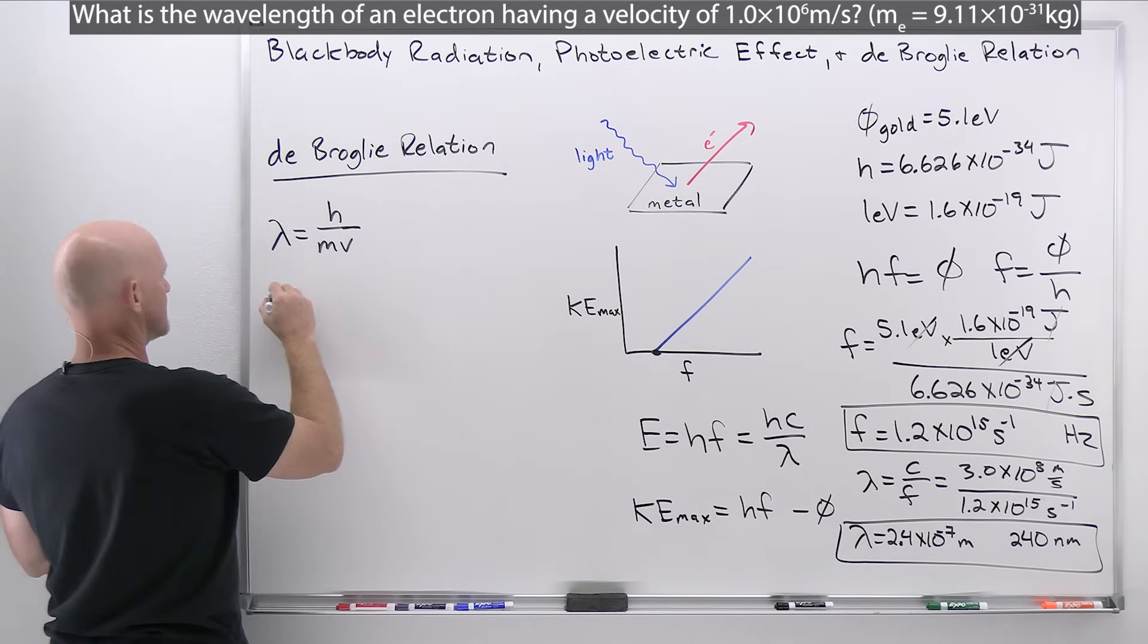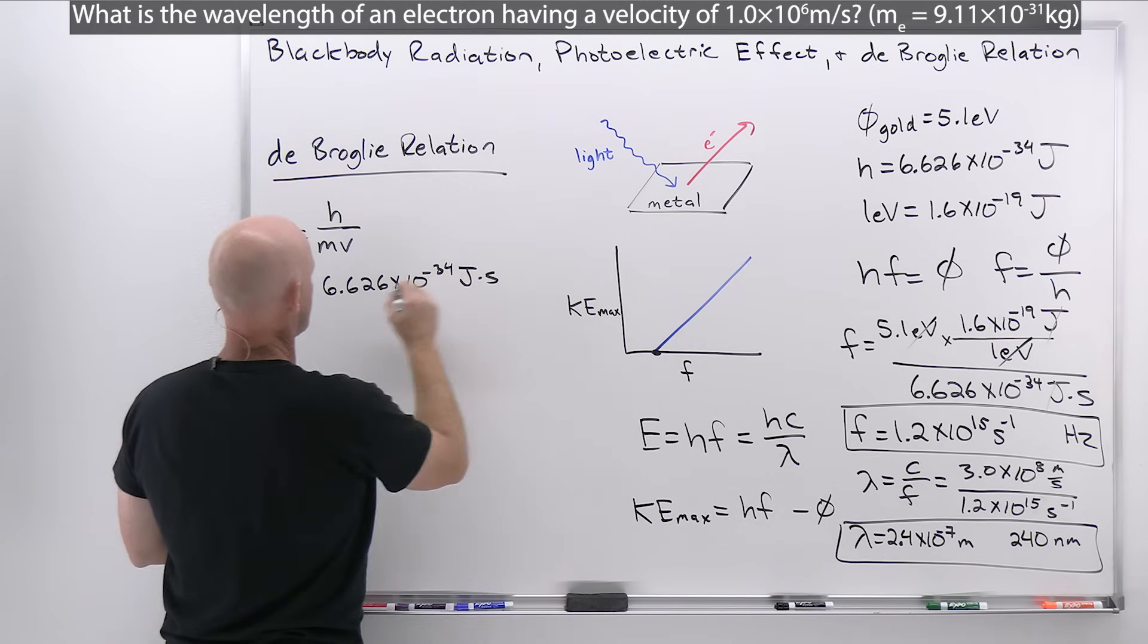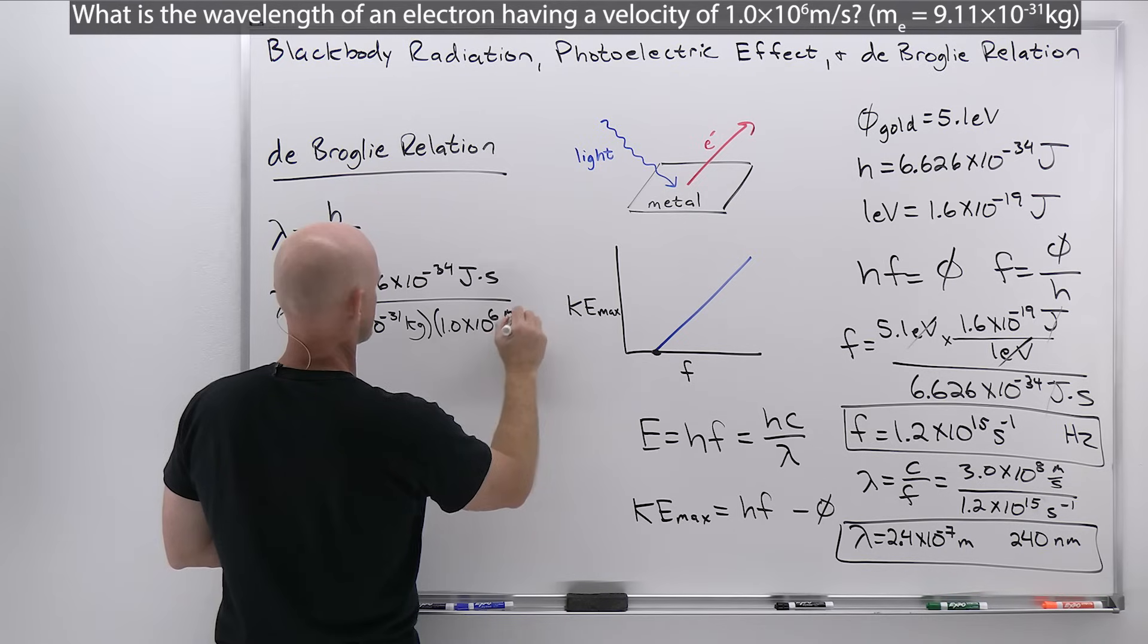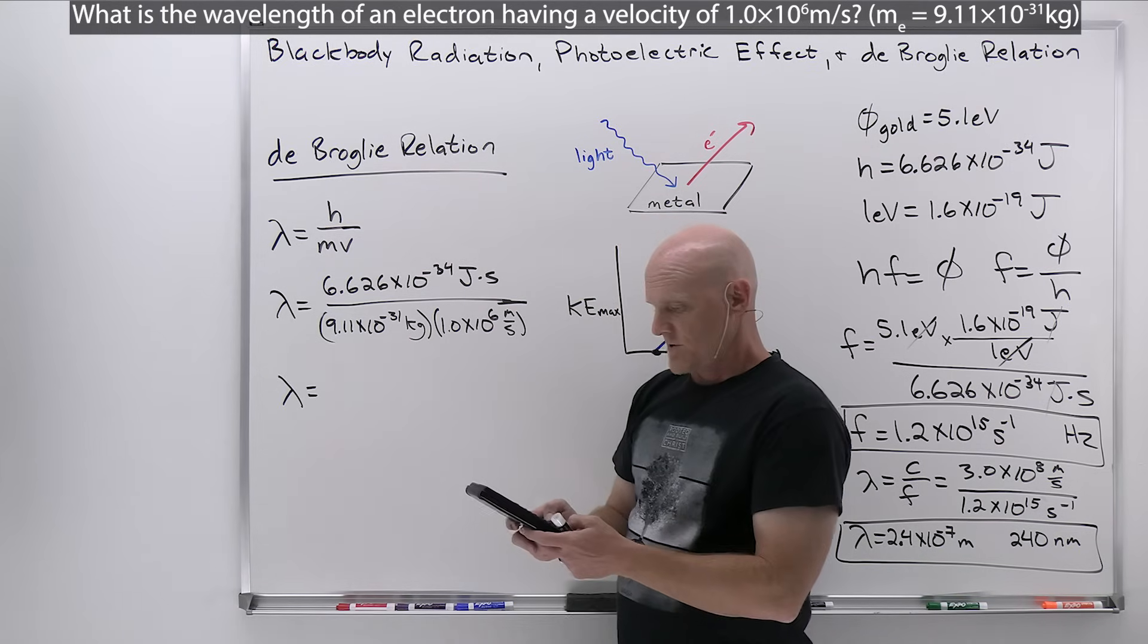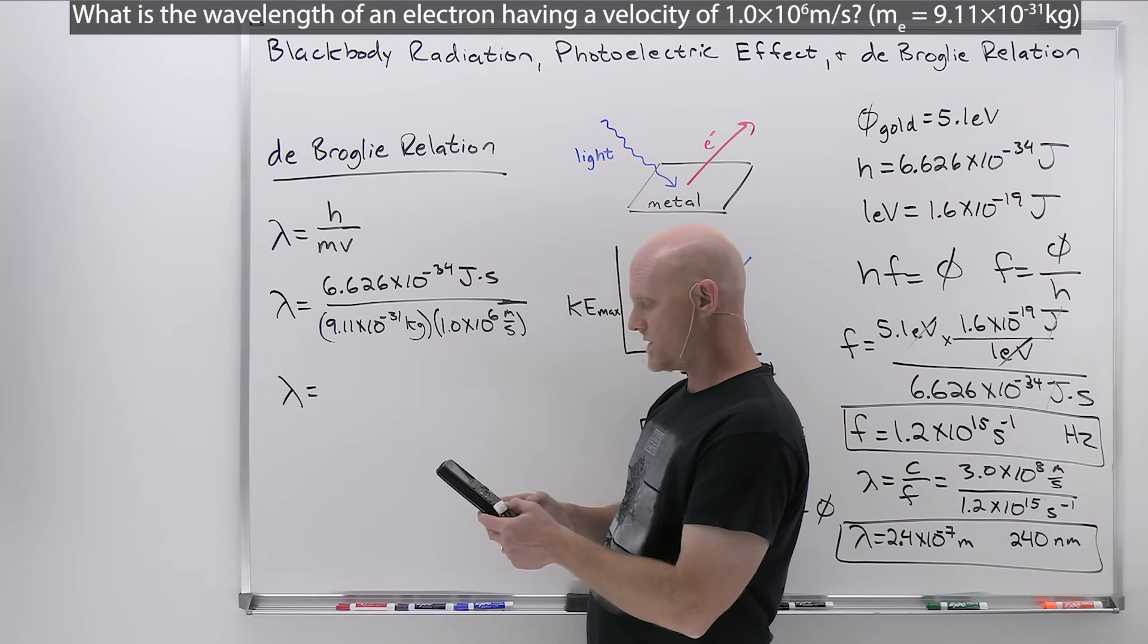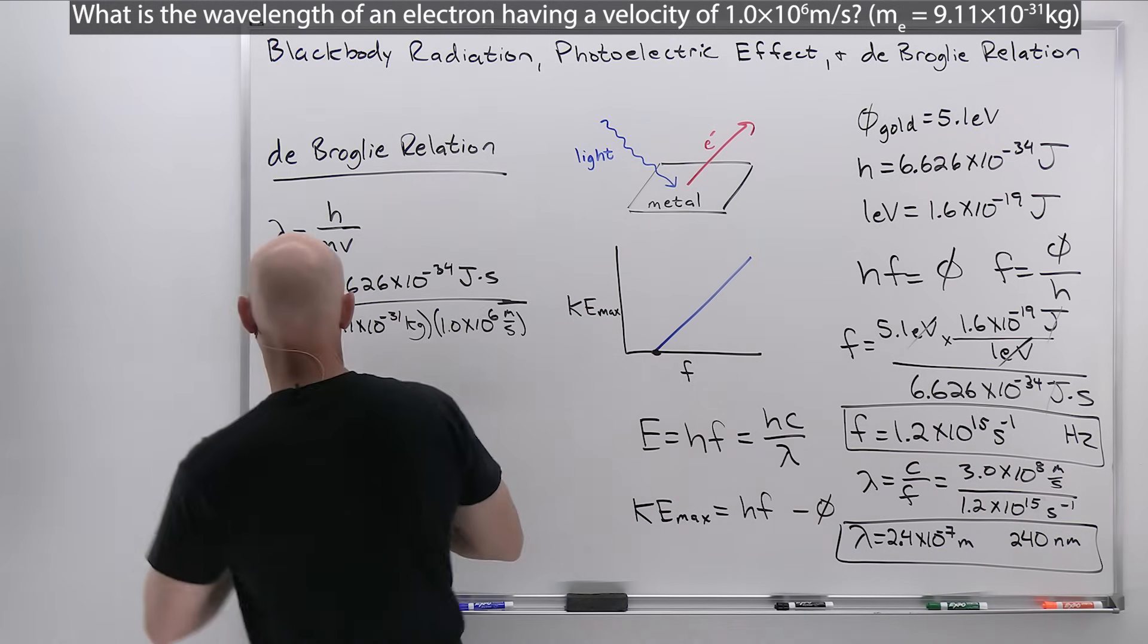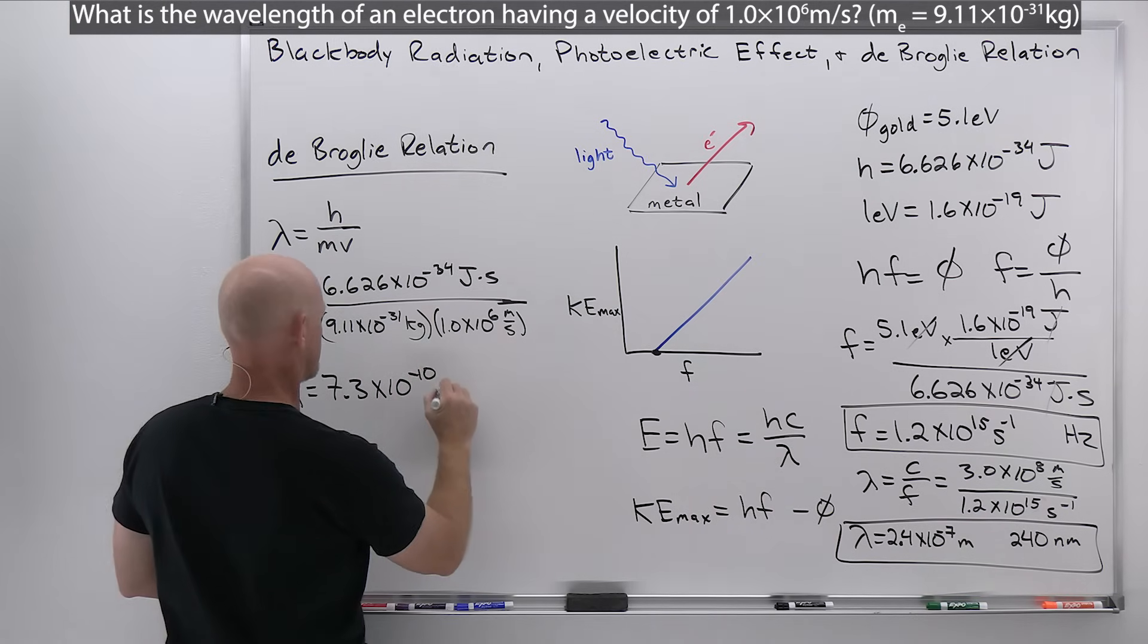From there, it's going to be simple plug and chug. So once again, we have that Planck's constant, 6.626 times 10 to the negative 34 joule seconds. Mass has to be in kilograms, 9.11 times 10 to the negative 31 kilograms times that velocity given of 1.0 times 10 to the 6 meters per second. We'll let our calculator do the heavy lifting. Planck's constant, 6.626 times 10 to the negative 34 divided by 9.11 times 10 to the negative 31 times 1 times 10 to the 6, close my parentheses, and we're going to get 7.27, which I'll round up to 7.3 times 10 to the negative 10 meters.